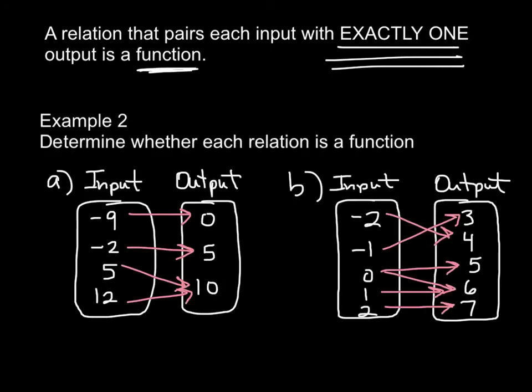In example 2, we have to determine whether each relation is a function. We have mapping diagrams here that show a relation, inputs to outputs. We need to show whether or not it's a function. Does every input only have one output? 9 goes to one output, 2 to one output, each input goes to one output. Yes, this right here is a function.